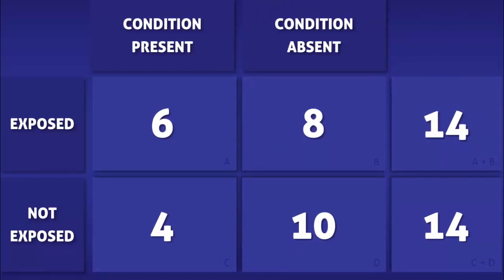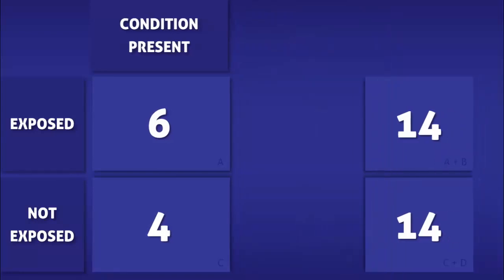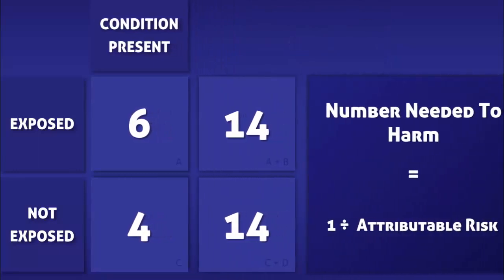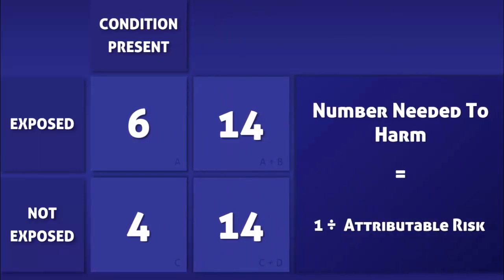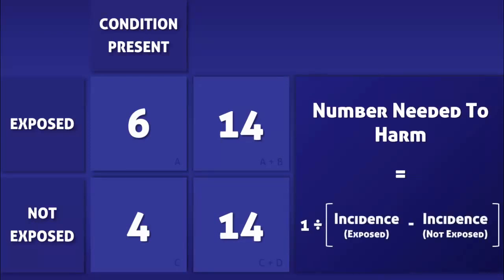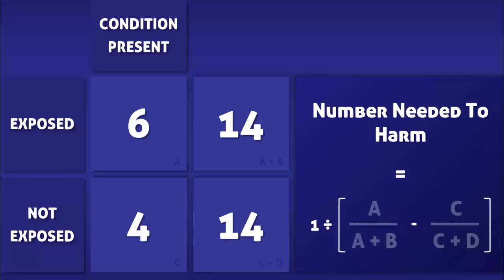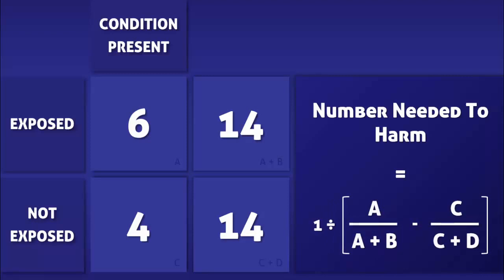To calculate the number needed to harm, we no longer need the data found in boxes B and D. The number needed to harm is calculated by dividing 1 by the attributable risk. The attributable risk is calculated by subtracting the incidence of the condition in those who are exposed by the incidence of the condition in those who are not. The incidence in those exposed is calculated by dividing A by A plus B, while the incidence in those not exposed is calculated by dividing C by C plus D.